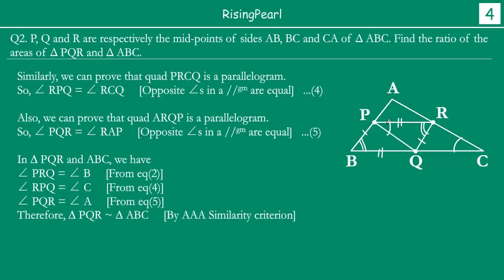Now if you look at the small triangle PQR and big triangle ABC, you will notice that angle B equals angle R, and angle P equals angle C. So we can say that these two triangles are actually similar — the small triangle and the big triangle — by AA similarity criteria.